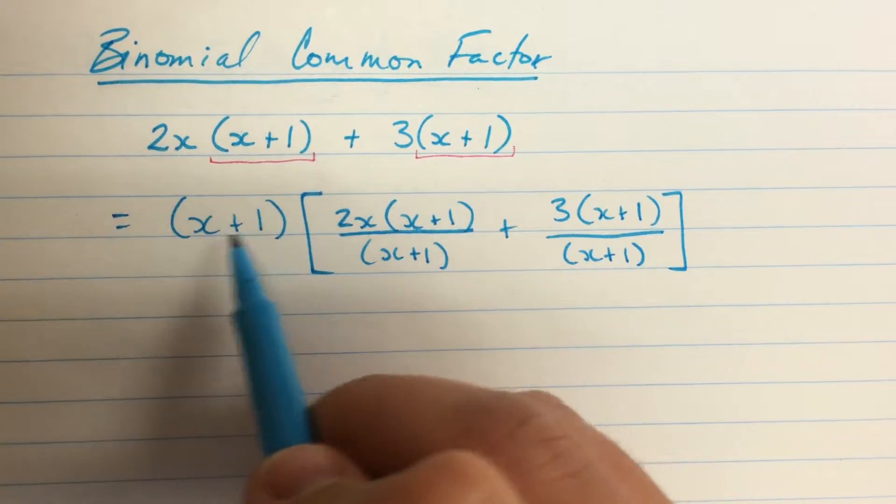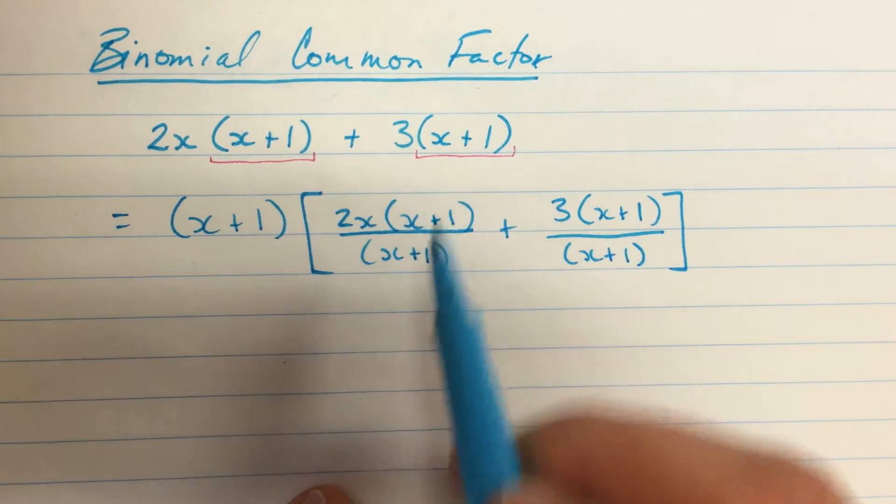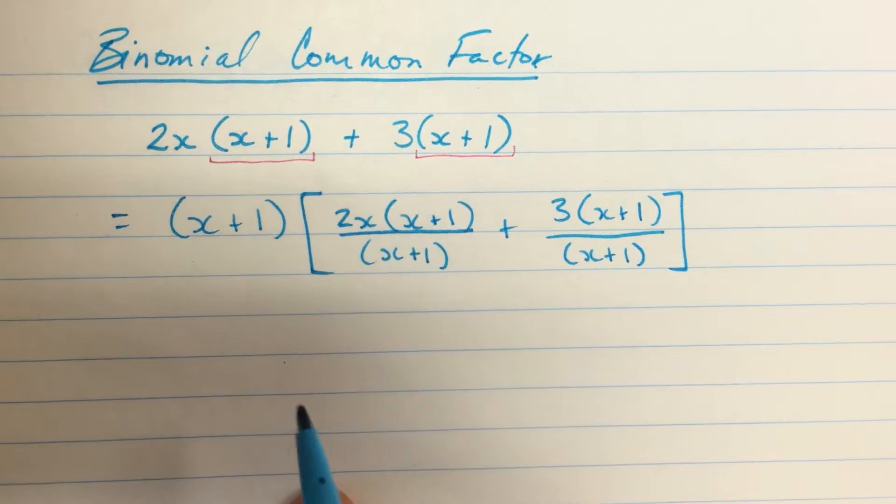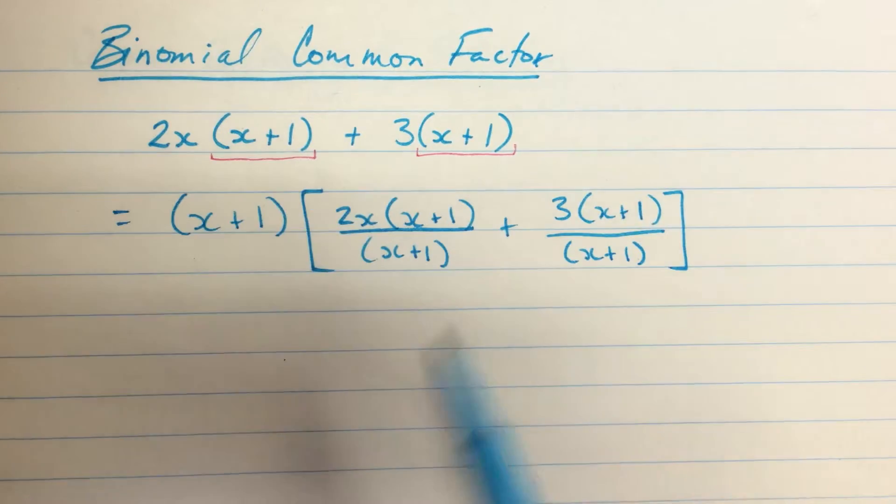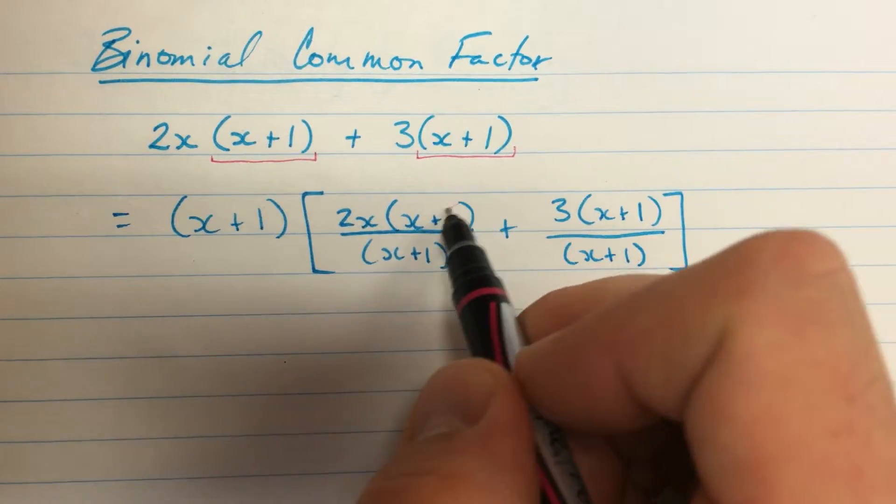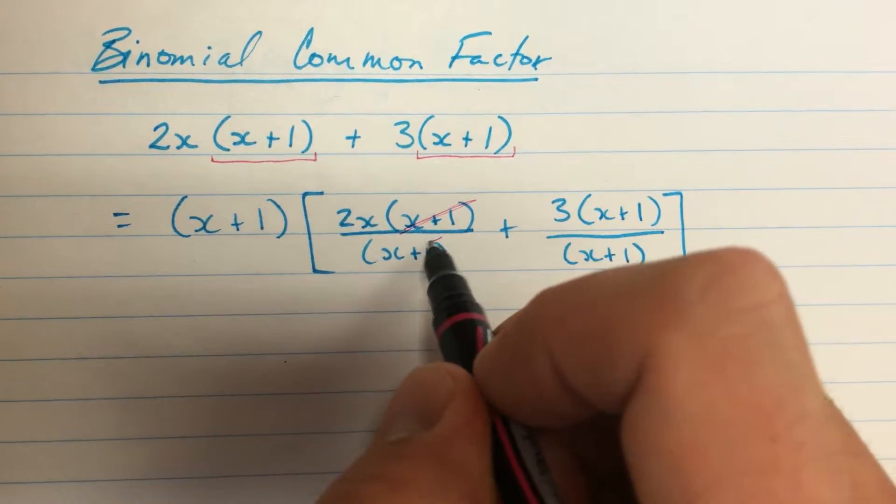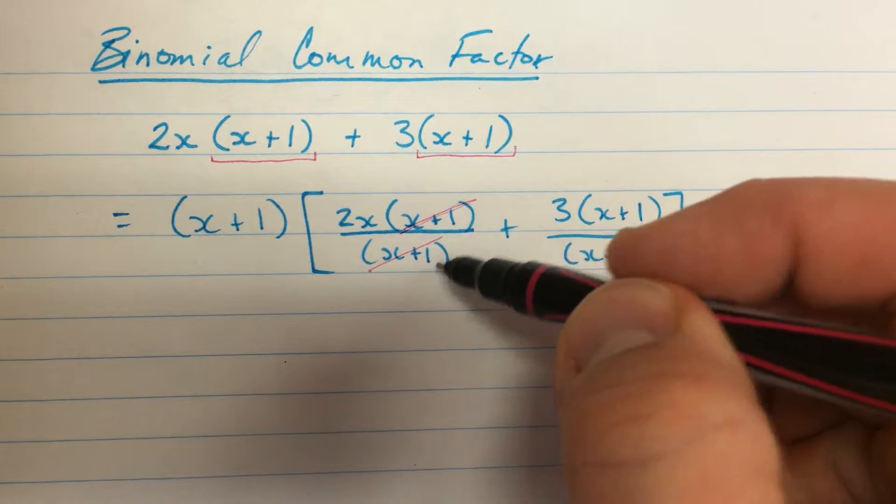And so I'm multiplying here by everything inside the bracket. And I'm dividing each term by that same amount. And so I haven't changed the value of the expression at all. These will cancel. I'm just going to cross them out like this. Remember cancelling is really this divided by this.